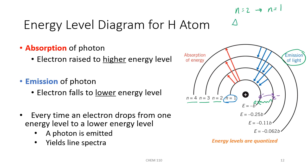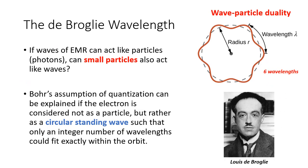The change in energy, delta E, can be calculated by taking the energy of the higher orbit minus the energy of the lower orbit. Every time an electron falls from a higher energy level to a lower energy level, a photon is emitted — that photon is what we see when we look at the line spectra. The Bohr model successfully accounted for energy level changes, explained the Rydberg equation, and explained the line spectrum for different elements, but unfortunately only worked for hydrogen or atoms with one electron.